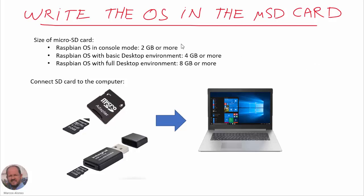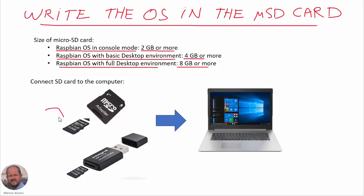The first step to set up our Raspberry Pi is to write the operating system on our micro SD card. We have different possibilities depending on the operating system we are going to install. If we want to install the full desktop environment, then we will need a micro SD card with 8GB or more.